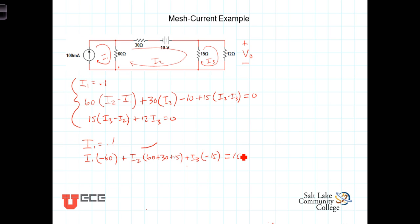Now the third equation. The third equation has no i1 terms, so let's put an i1 with a 0 there to hold the place, plus i2 times negative 15, plus i3 times 15 plus 12. And the sum of those terms must equal 0. And there again are three equations and three unknowns.